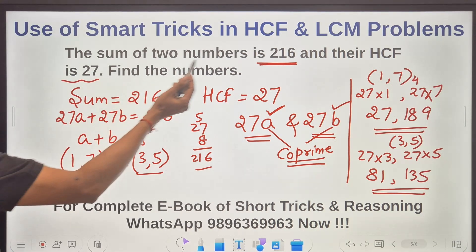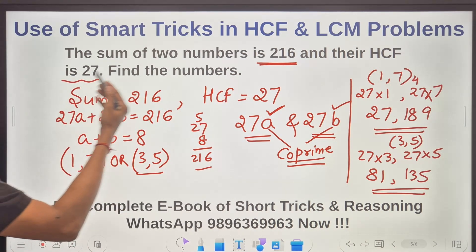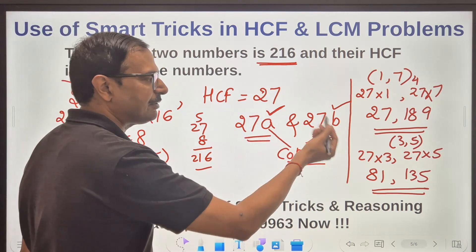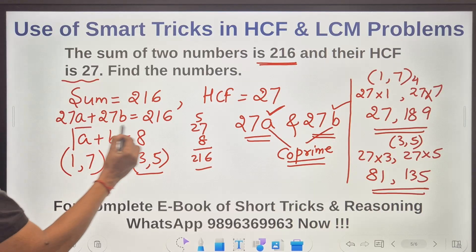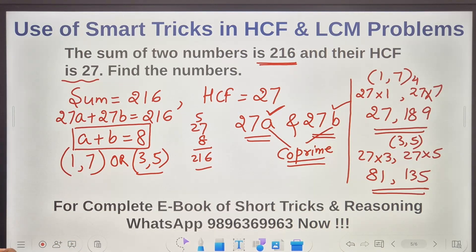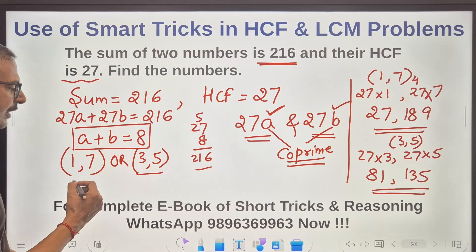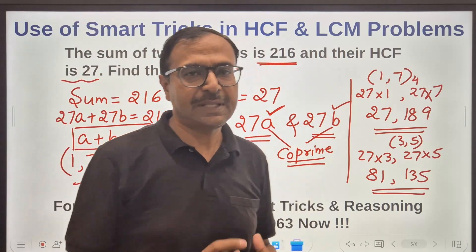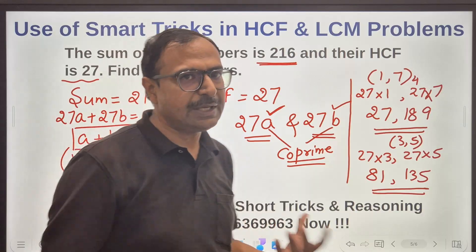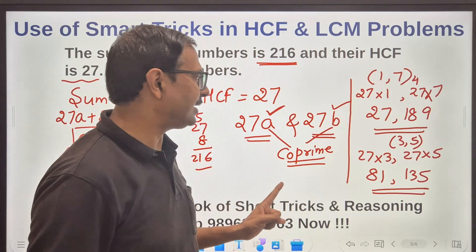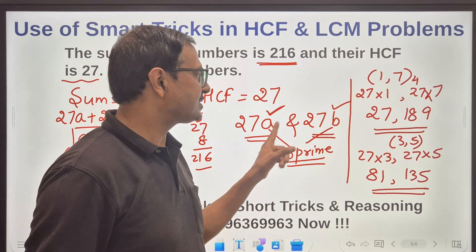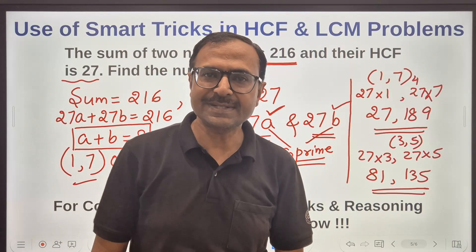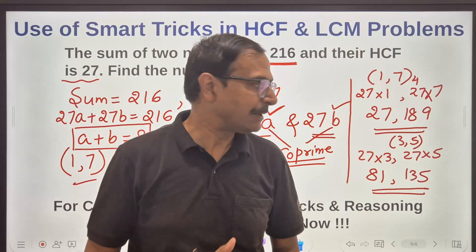So we worked out the question: the sum was 216 and the HCF was given as 27. We assumed the numbers as 27A and 27B, found the relationship A + B = 8, and identified the two co-prime pairs (1,7) and (3,5) that work. This is the basic condition — understanding what values of A and B work is key to solving HCF and LCM based questions.